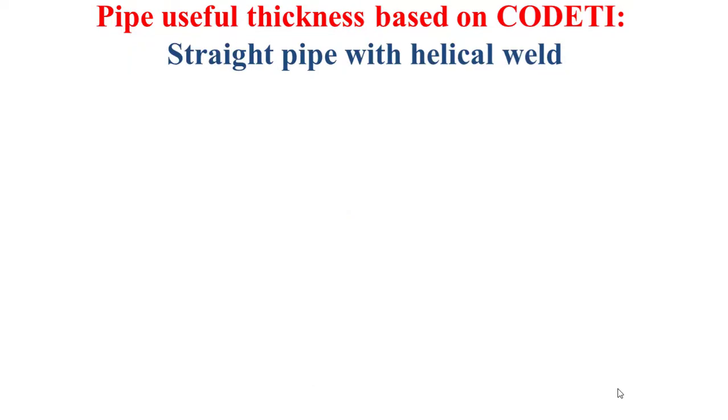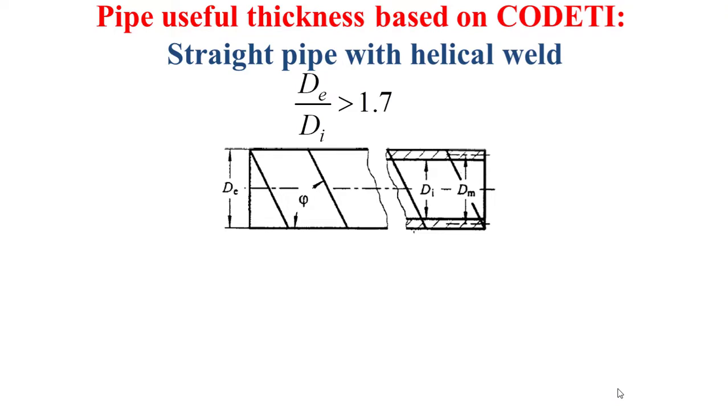Now, for the straight pipe with helical welt, this case is considered when the external diameter of the pipe divided by the internal diameter is higher than 1.7.